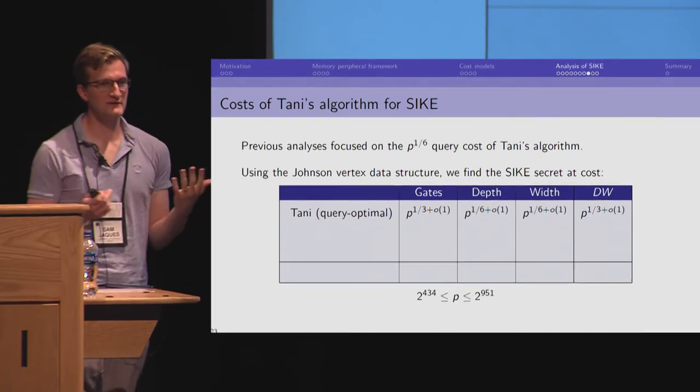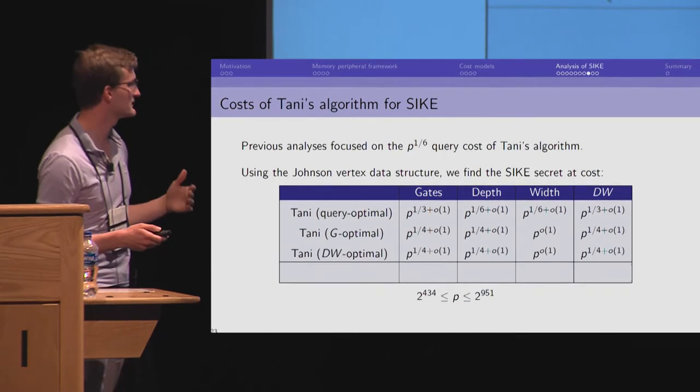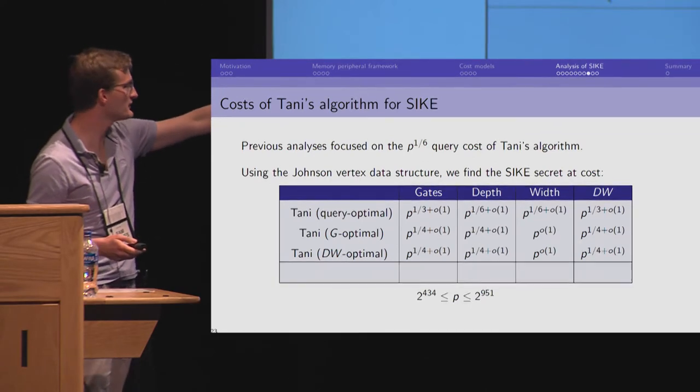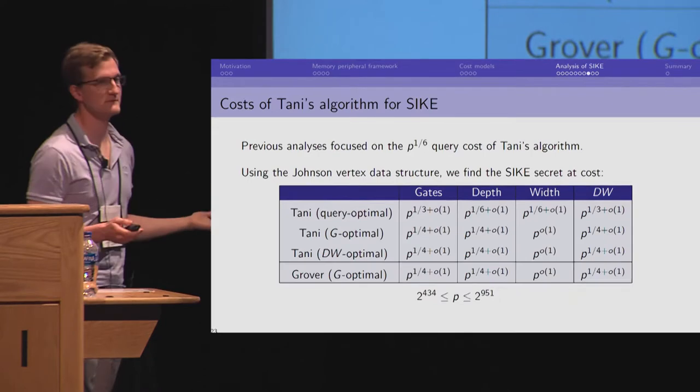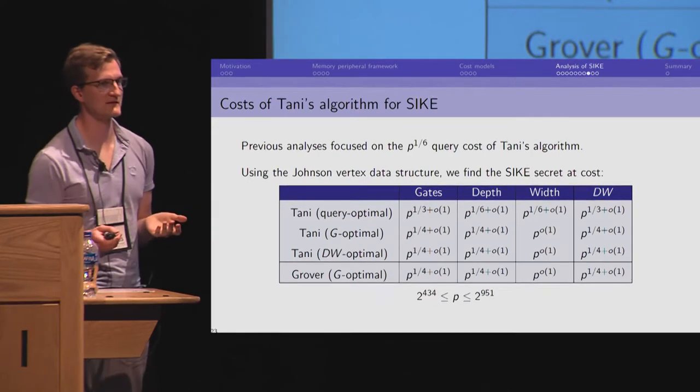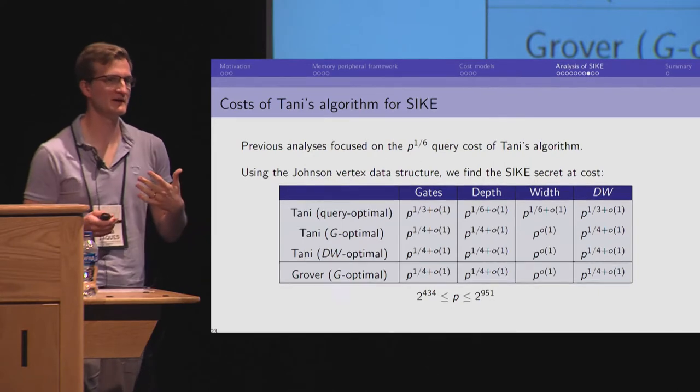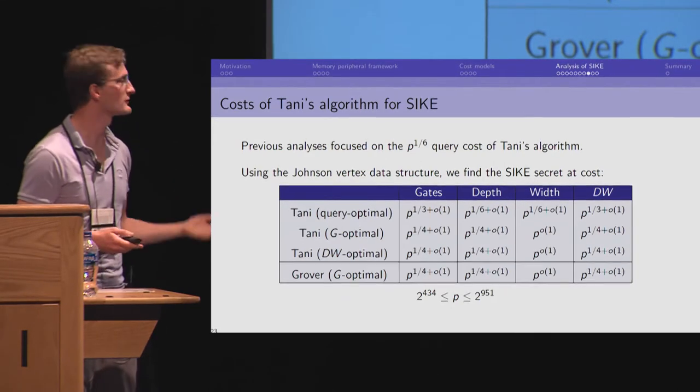Now, maybe this isn't fair to Tani's algorithm, which was optimized for queries. So, if we re-optimize for g-cost or dw-cost, we can bring both the gate and dw-cost down to P to the 1/4. But this is actually the same as Grover's algorithm, up to polylogarithmic factors. So, here, what we've shown is that Tani does not provide anything beyond a polylog advantage over Grover for either of these costs.